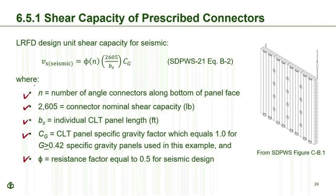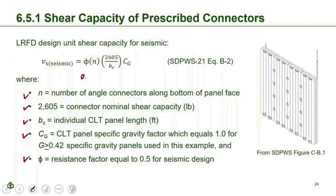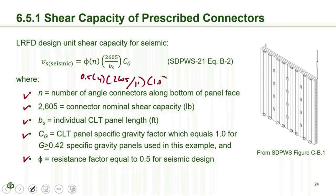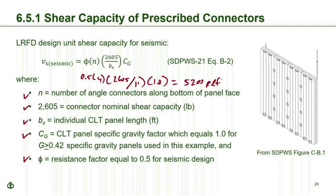Assuming 4 connectors per foot of panel length (2 on each side), the maximum unit shear capacity is approximately 5,200 PLF LRFD — calculated as 0.5 × 4 × 2,605 / 1 ft × CG of 1.0 — which equals approximately 3,700 PLF allowable stress design. This is a little more than twice the unit shear capacity of nailed wood structural panel shear walls, but the CLT system also has roughly half the R factor (3 instead of 6.5), so design forces are about twice as large.